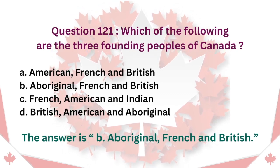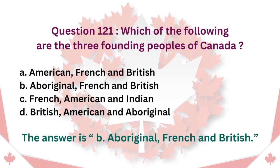Question 121: Which of the following are the three founding peoples of Canada? A. American, French and British. B. Aboriginal, French and British. C. French, American and Indian. D. British, American and Aboriginal. The answer is B. Aboriginal, French and British.